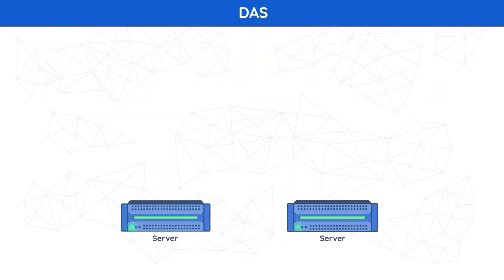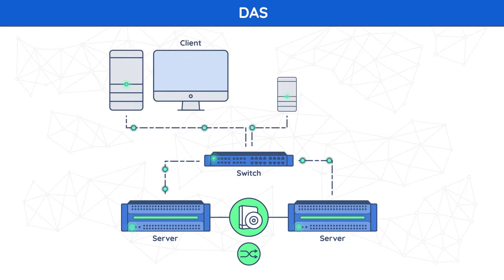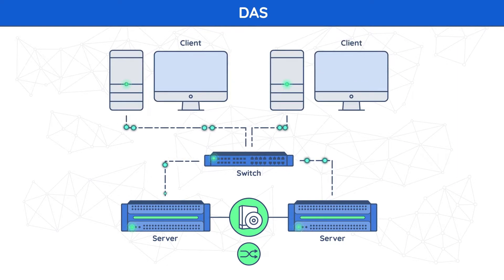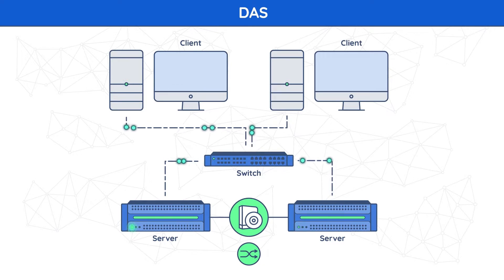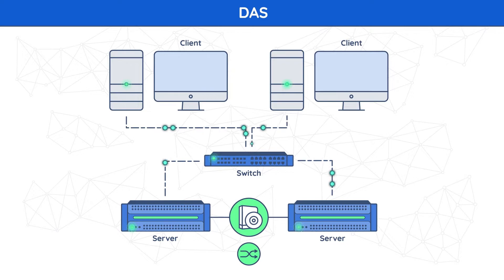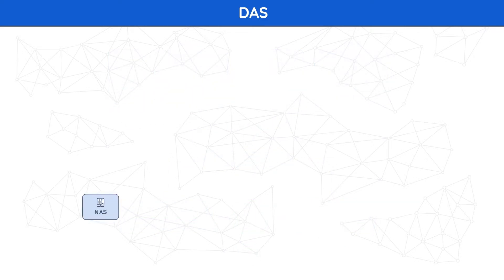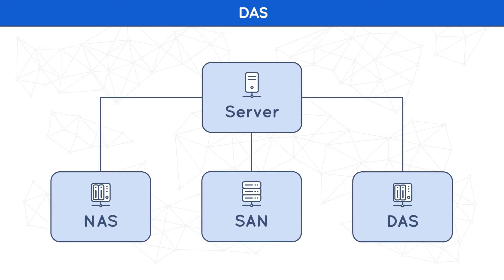In a hyperconverged infrastructure, compute and storage resources are combined within the same physical box. The software layer is used to replicate local storage and make it accessible over the hyperconverged network as a traditional SAN. As a result, a hyperconverged infrastructure gains most enterprise-grade SAN benefits, together with higher cost efficiency and lower maintenance demand. NAS, SAN, and DAS are just a few options of how storage can be presented to servers.